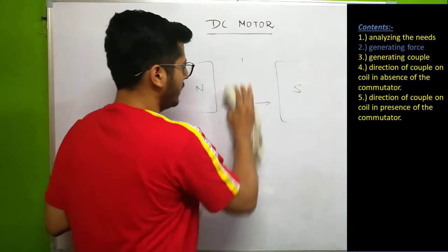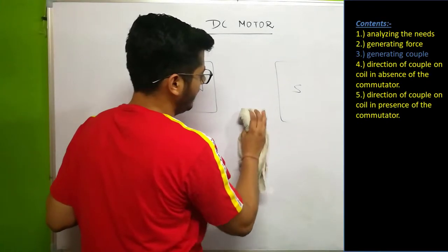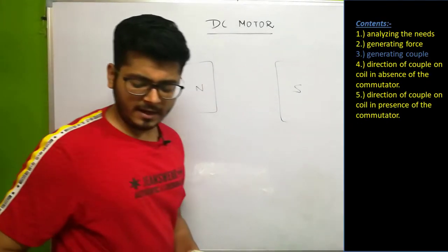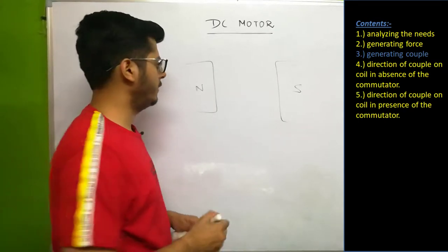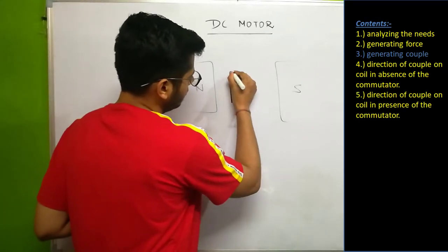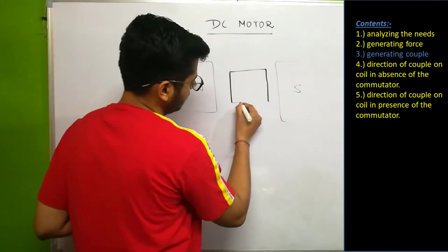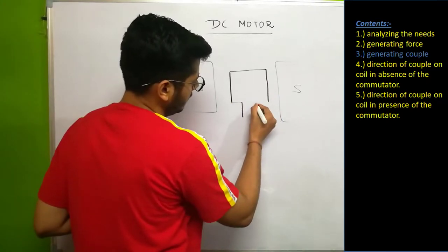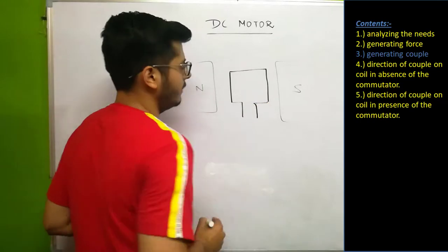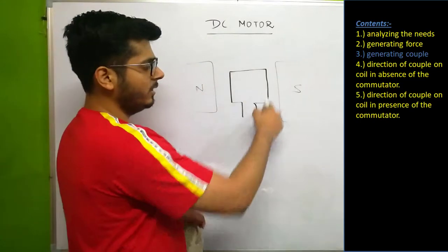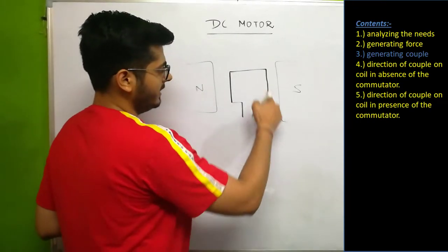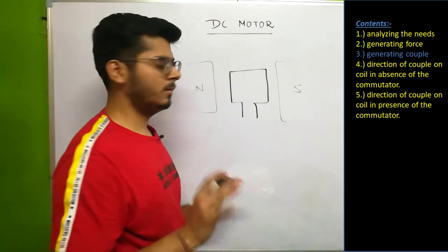To create a couple, we changed the shape of this body and made it in a particular manner. This arrangement is called a coil — a rectangular coil.